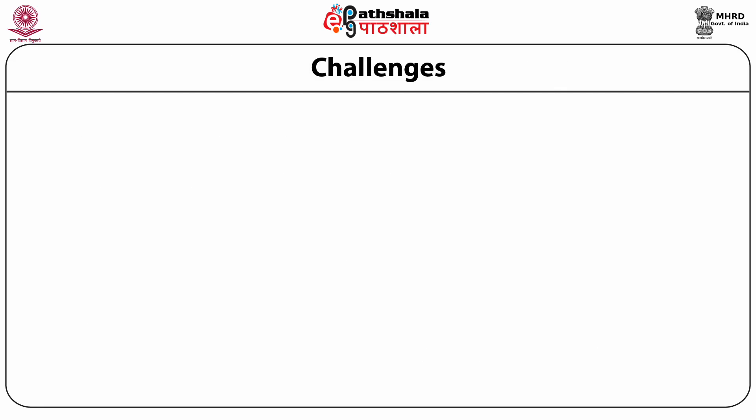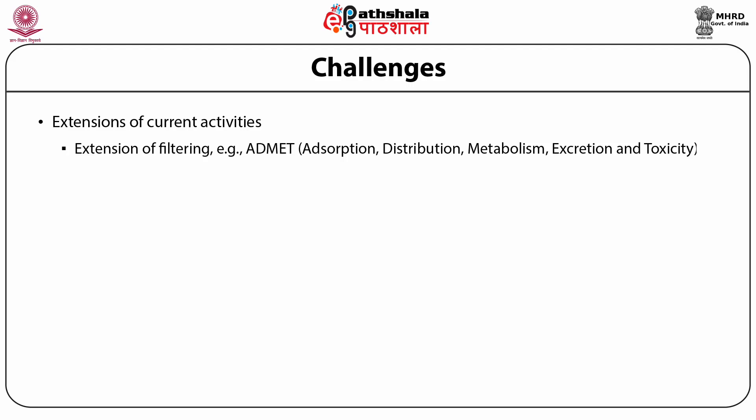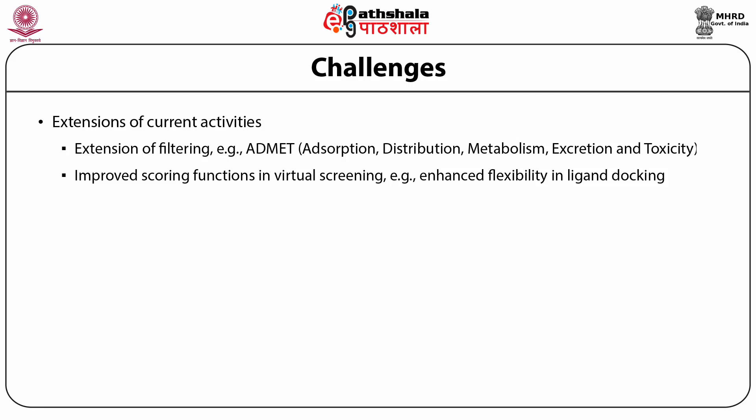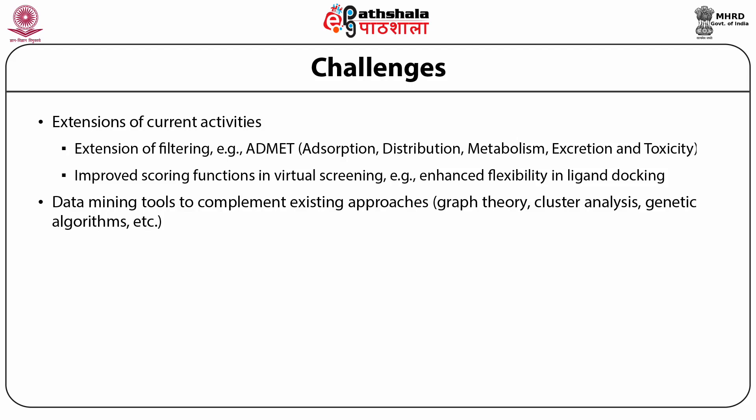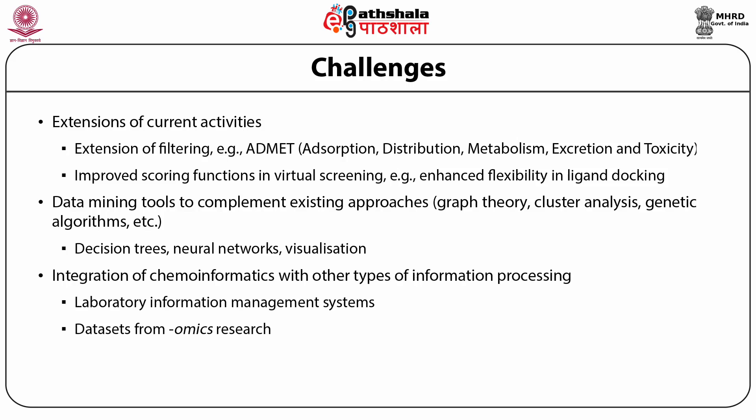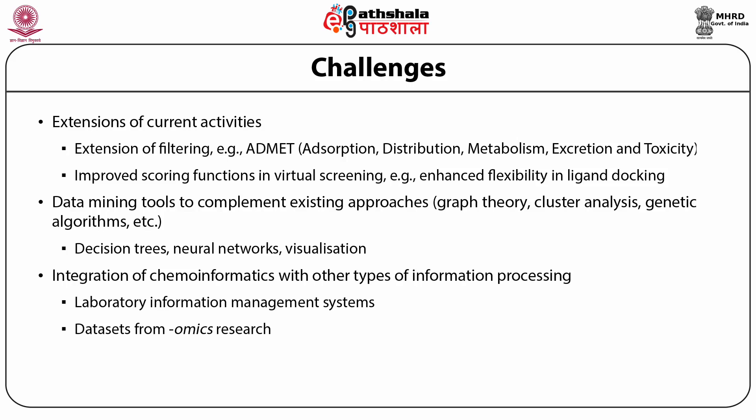Challenges in the field include: filtering for properties like ADMET, as many reactions using the same chemicals happen in biological experiments; improving scoring functions related to functional features of substructures; and developing faster data mining methods and decision tree tools for the huge data explosion. Many people are working on quickly collecting, processing, and quantitatively annotating information. Also, material science, food science, atmospheric chemistry, and polymer chemistry have recently entered the application scope of chemoinformatics.